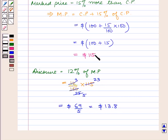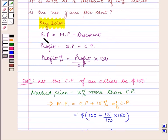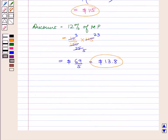So now, we have the mark price of the article is $115 and the discount is $13.8. As we know, selling price is equal to mark price minus discount. Therefore, selling price of the article is equal to 115 minus 13.8 dollars.